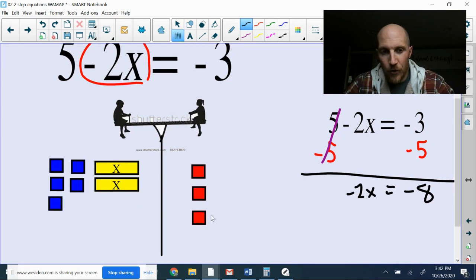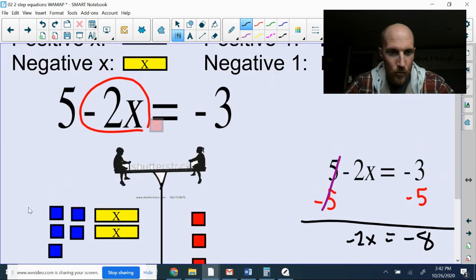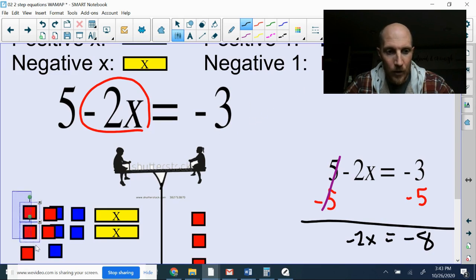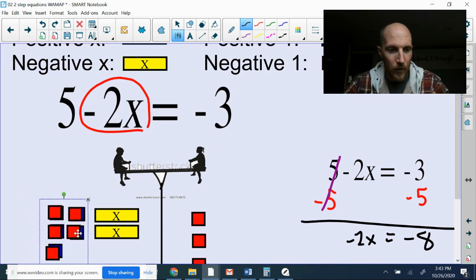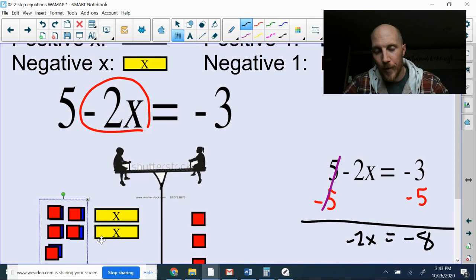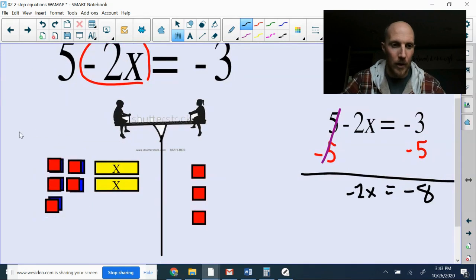All right. So my algebra tile illustration, I'm going to need to subtract 5. I'll just take a second here to get my illustration caught up. So I've already done this on the algebra equation. But when I take these 5 negatives, drop them on top of the 5 positives, the positives and negatives are going to add together to make zero. So there's going to be nothing left. They're all gone.